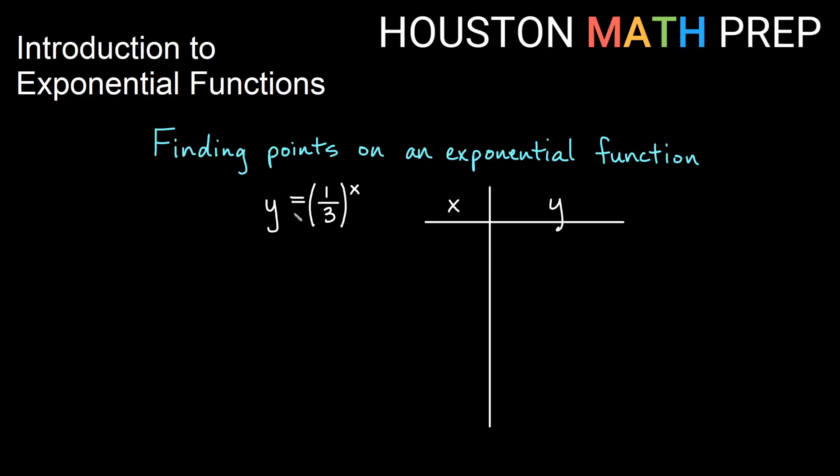Let's do a similar thing now with a different exponential function. We have y equals 1 third to the x. So let's just plug in some similar numbers here. We'll use 1 and 2 and 3 and then 0 and negative 1, negative 2, negative 3 again. So if I plug in the first power, then y would equal 1 third to the 1. That's going to be just 1 third. If I plug in 2 for x, 1 third squared, then y is going to equal 1 over 9. If I plug in 3 for x, I will get 1 cubed on top, which is 1, and 3 cubed on the bottom, which is 27. So we get 1 over 27.